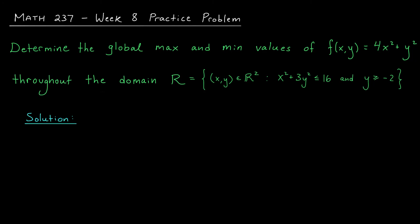Hey there folks, Zach here. In this video, we're going to check out an example involving constrained optimization. Specifically, we'd like to find the maximum and minimum values of this function, f(x,y) equals 4x squared plus y squared.